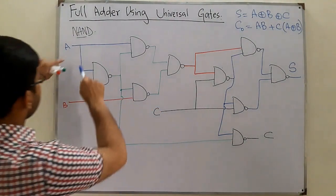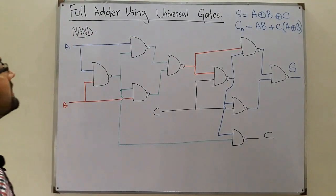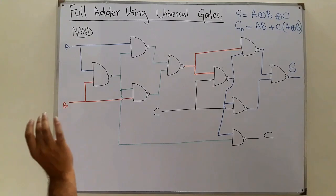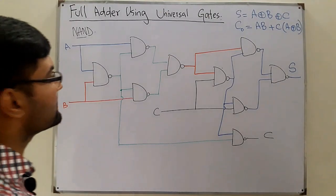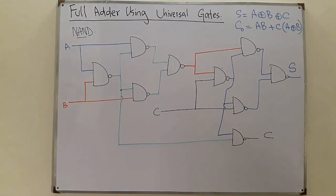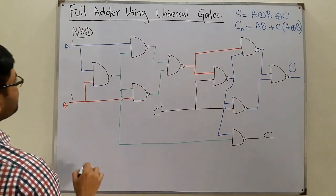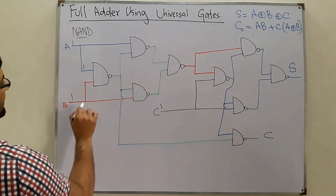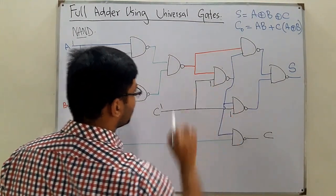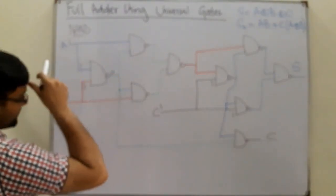Let's assign values to A, B, and C. We give values A=1, B=1, C=1. You have a 1 at A input, a 1 at B input, and a 1 at C input. From the NAND truth table, 1 NAND 1 equals 0 — because 1 AND 1 is 1, then NOT gives 0.